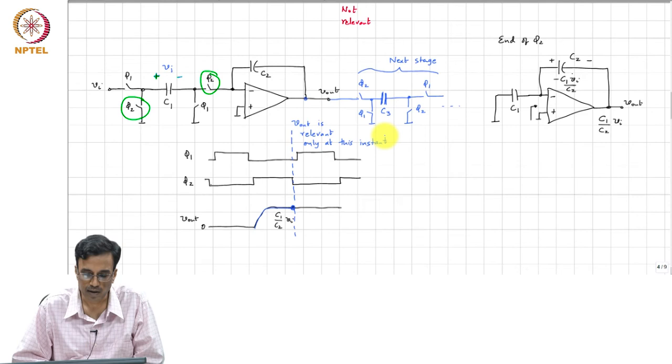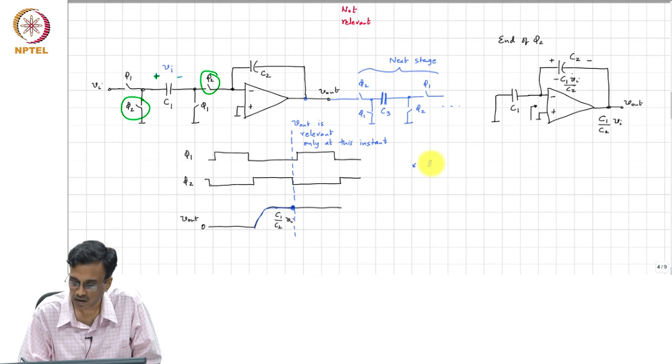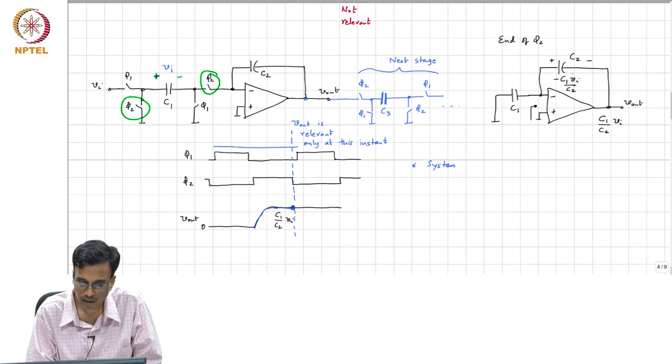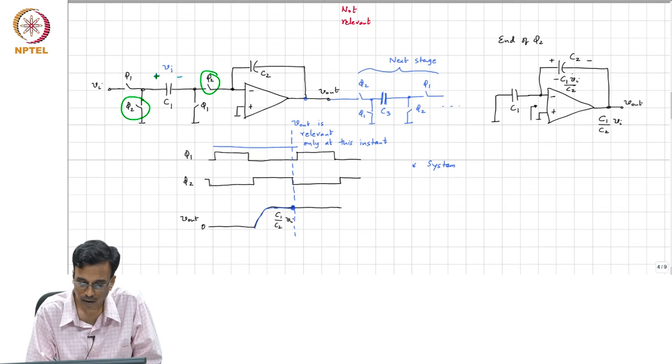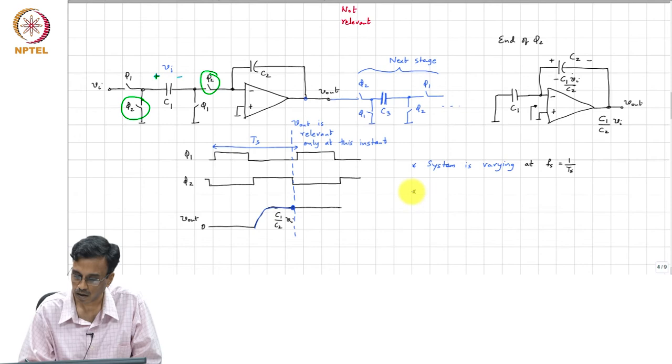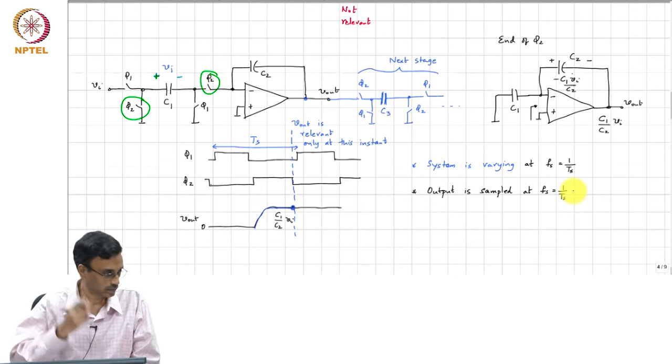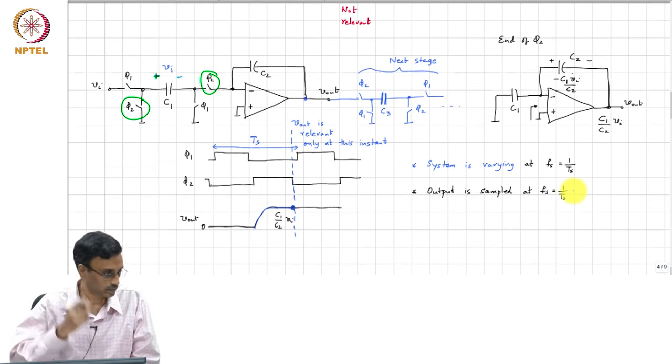This is another example of a system which is varying periodically with time. And what is the period with which the system is varying? If I assume that that is T_s, the system is varying at F_s, which is 1 over T_s, and the output is sampled at the same rate. Does it make sense?